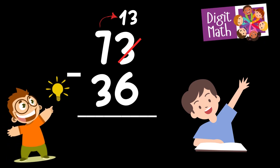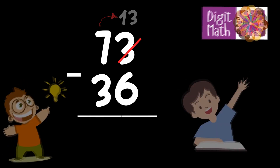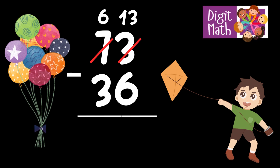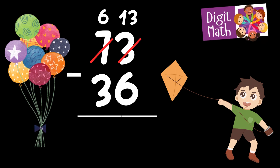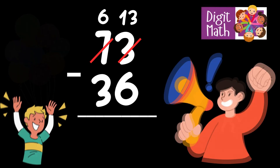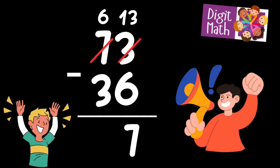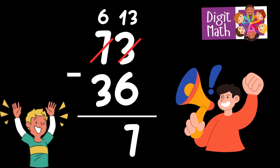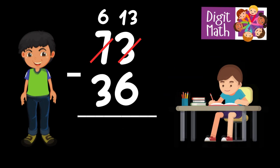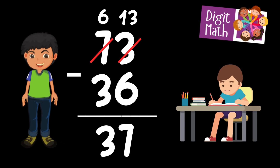In the tens column, we have 7. We take 1 from the tens, leaving 6 in the tens column and turning the units column into 13. Now we have 13 in the units column. Subtract 6 from 13, which equals 7. In the tens column, we now have 6. Subtract 3 from 6, which equals 3. So the final result is 73 minus 36 equals 37.